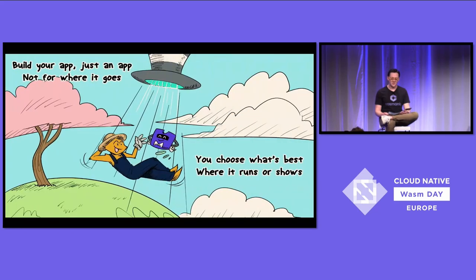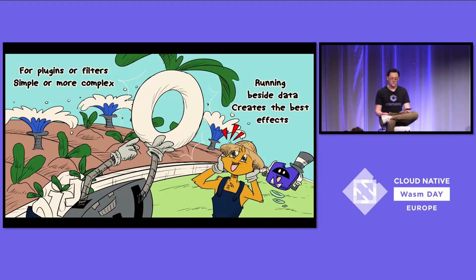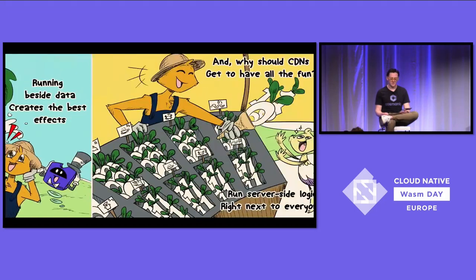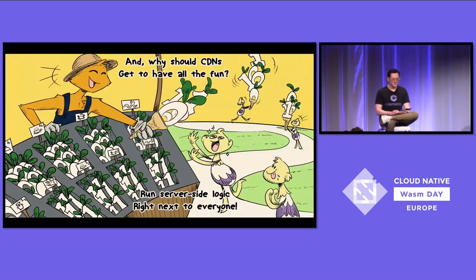Build your app — just an app, not for where it goes. You choose what's best for where it runs or shows. For your serverless functions on a server out there, you can run local tests, which feels much, much more fair. For plugins or filters, simple or more complex, running beside the data creates the best effects. And why should CDNs get to have all the fun? Run server-side logic right next to everyone.